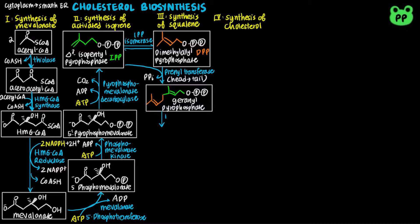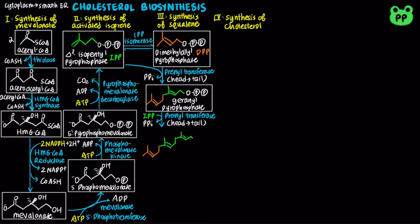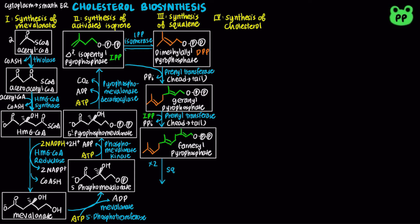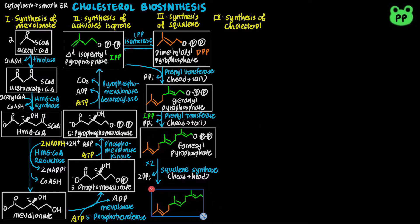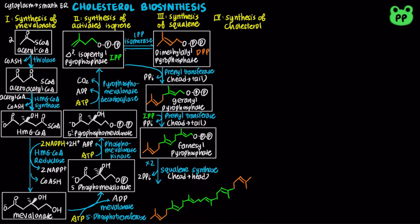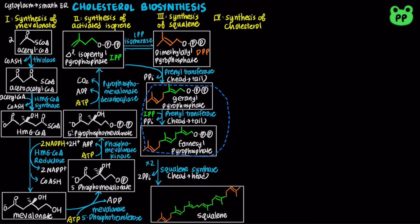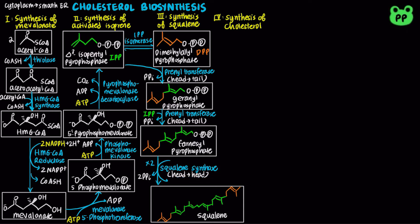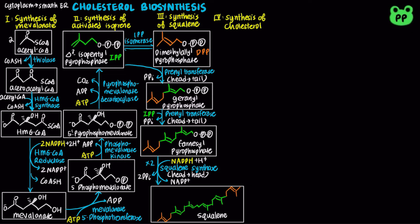Next, prenyl transferase catalyzes another head-to-tail condensation between IPP and geranyl pyrophosphate, releasing pyrophosphate and producing the 15-carbon intermediate farnesyl pyrophosphate. Finally, squalene synthase catalyzes a head-to-head condensation of two molecules of farnesyl pyrophosphate, with the elimination of both pyrophosphates, producing the 30-carbon intermediate squalene. This reaction is coupled to the oxidation of NADPH to NADP+.